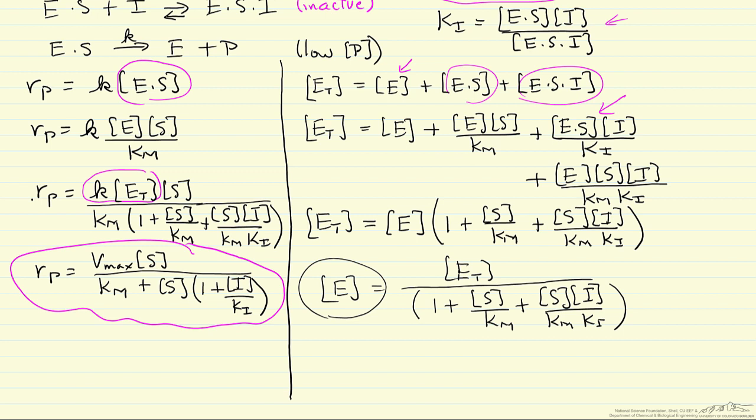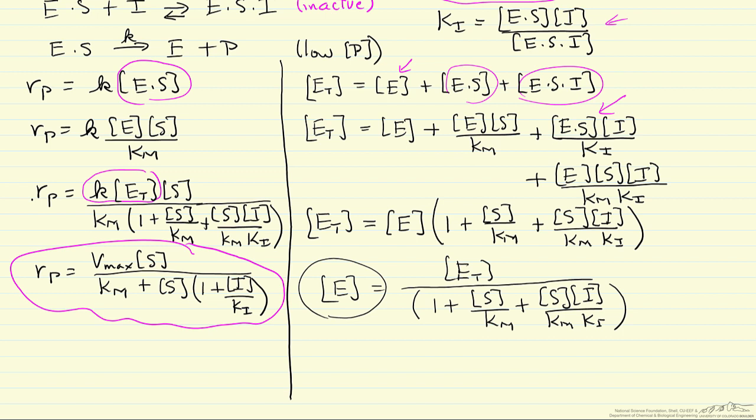And so this now is our final answer. It's the rate expression for enzyme kinetics where we have uncompetitive inhibition. And if we compare it to the Michaelis-Menten expression, it looks similar. This is the Michaelis-Menten expression, but we have this additional term in the denominator which is telling us the rate is going to be slower, of course, because of inhibition. But it looks similar in form to the Michaelis-Menten expression.